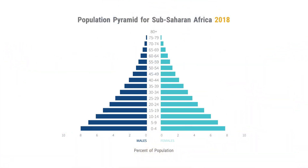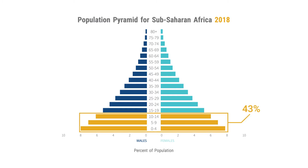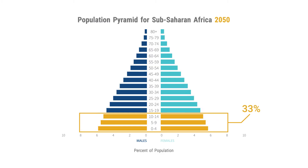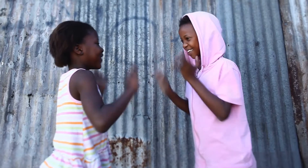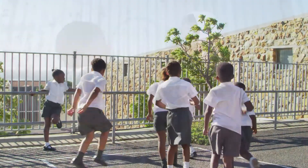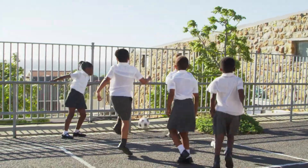In Sub-Saharan Africa, most of the population is still very young. Today, 43 percent of the population is under the age of 15. By 2050, we project that this share will decline to 33 percent of the population. Investing in the health and education of this youthful population is critical for countries hoping to achieve the dividend.